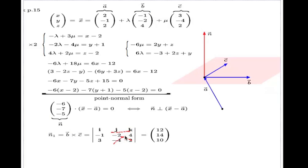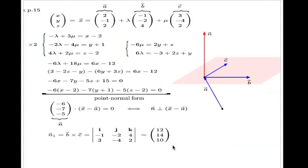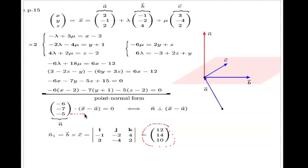The i-component minor gives: negative 2 times 2 = negative 4, plus 16 = 12. The j-component minor gives: negative 1 times 2 = negative 2, and 3 times 4 = 12, so negative 14; but j carries an extra negative sign, so it's plus 14. The k-component minor gives: negative 1 times negative 4 = 4, plus 6 = 10. So n₁ = (12, 14, 10). This is a scalar multiple of the original normal — this cross product method is much faster than the substitution approach.